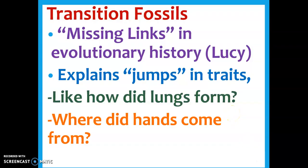Alright, so we're jumping back into transition fossils. These are the types of fossils that help explain what we call jumps in traits. We have fish swimming in the ocean and we have amphibians moving out of the water, but where did arms come from? Where did legs come from? How did those evolve?